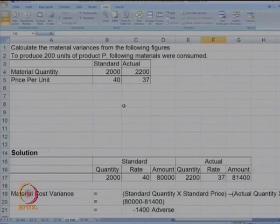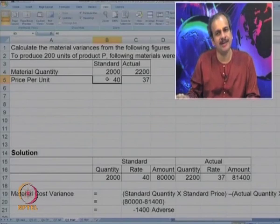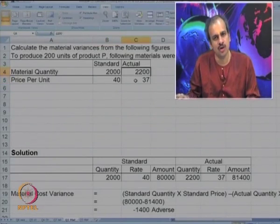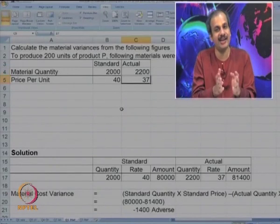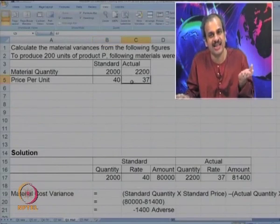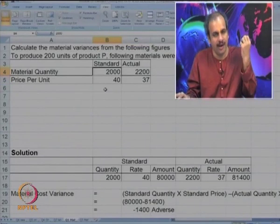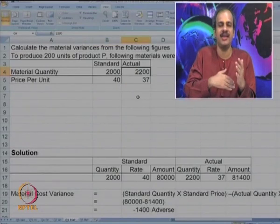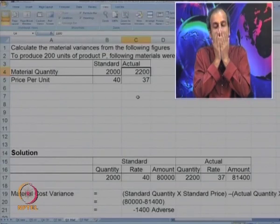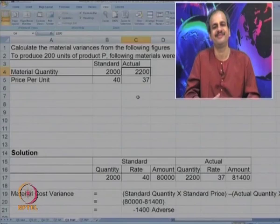Now the case: calculate material variances. To produce product P, 200 units, the following material is consumed. As per the standard, quantity is 2000 and price is 40. Actual quantity is 2200 and the actual price is 37. This rarely happens that actual price is less than the standard, but in this case it has happened. Standard price was 40, actual price is 37 — so you have saved 3 rupees. But if you look at quantities, you should have consumed 2000 but you have actually consumed 2200, so there is more consumption and more cost.